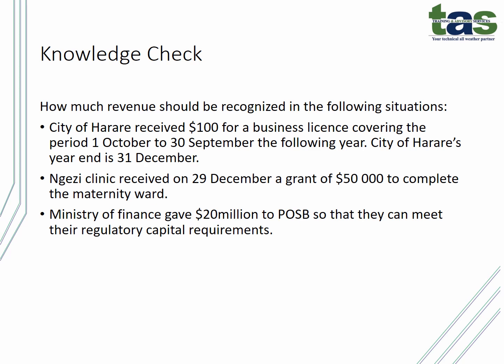Second example: a clinic receives on 29 December a grant of fifty thousand dollars to complete the maternity ward. In this case, no revenue should be recognized because it is linked to an obligation — they have to construct a maternity ward. To the extent the ward has not been constructed, no revenue should be recognized. Third example: the Minister of Finance gave twenty million dollars to a public entity so that they can meet their regulatory capital requirements. This is an injection from the owners and should not be regarded as revenue.